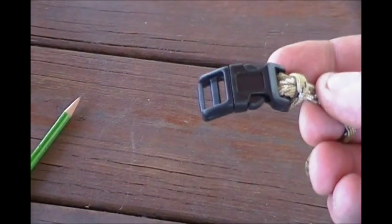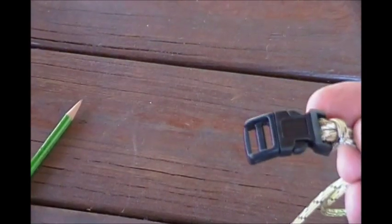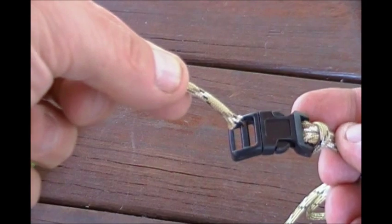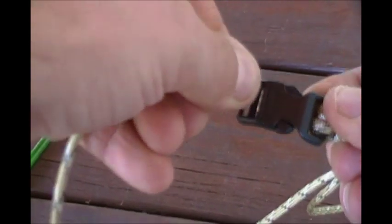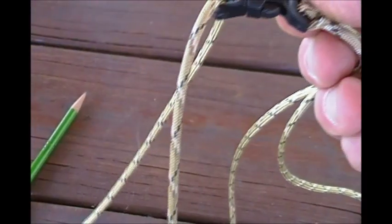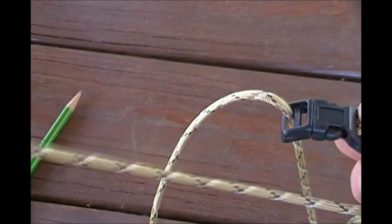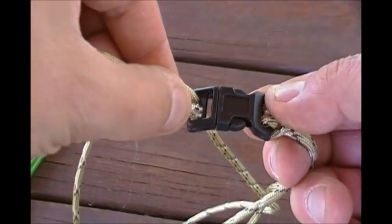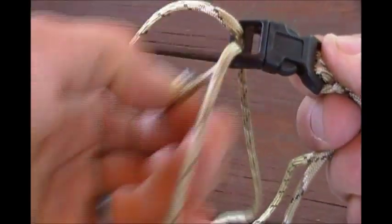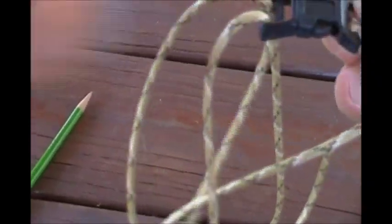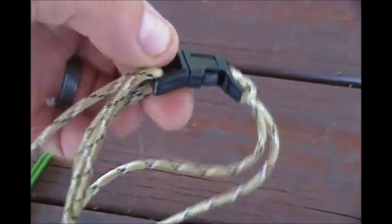So once you have this side of the buckle ready, you're going to take the cut ends, bring them around, and I put them through the first hole and pull them through.